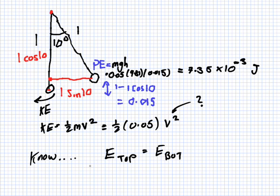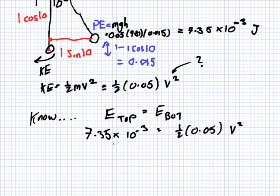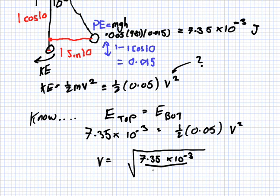So that means 7.35 times 10 to the minus 3 must equal a half mv squared. So v would be square root 7.35 times 10 to the minus 3 all over 0.025. What's that, please?